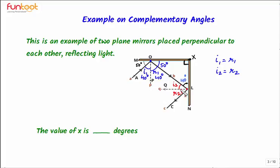QL is the normal at point L, so this complete angle is 90 degrees. If this angle is 40 degrees, then I2 here should be 50 degrees. Writing 50 degrees here — and if I2 is 50 degrees then R2 should also be equal to 50 degrees, because the angle of incidence is equal to the angle of reflection. Once again, QL is the normal, so if this complete angle is 90 degrees and this angle is 50 degrees, that means x will be 40 degrees. Therefore x is equal to 40 degrees, which is the answer.